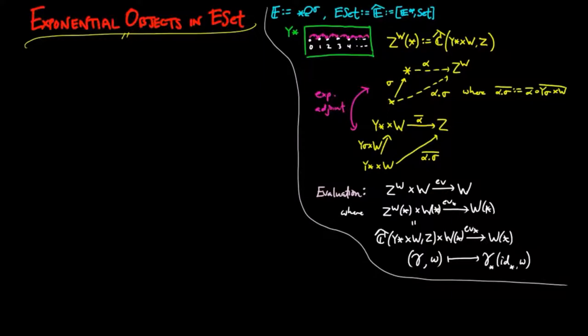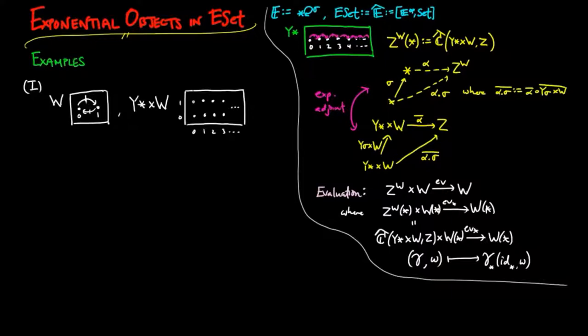So let's construct a few examples of exponential objects in the category of evolving sets to get a better feel for what's going on here. If W is the evolving set which is a 2-cycle between two figures 0 and 1, then the product of the representable in W has two copies of the natural numbers as figures, with a process which crisscrosses between the 0 row and the 1 row.